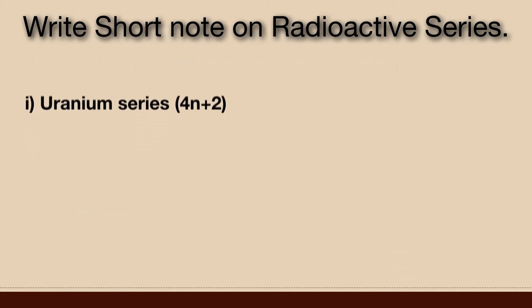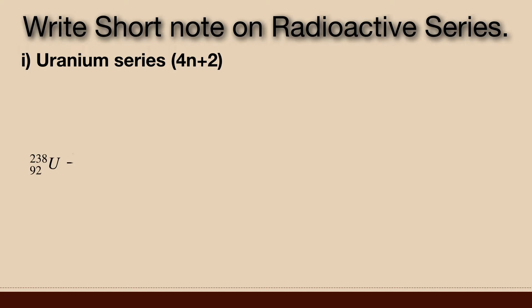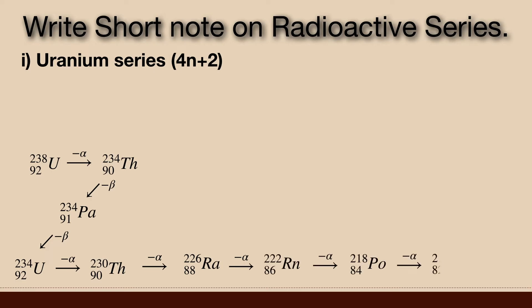Uranium series. The 4n plus 2 chain of uranium 238 is called the uranium series or radium series. The mass number of each member of this series can be expressed in the form of 4n plus 2, where n is integer. Beginning with naturally occurring uranium 238, this series includes the following elements.